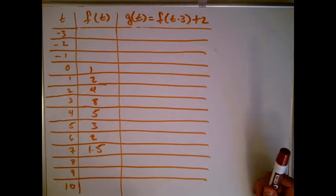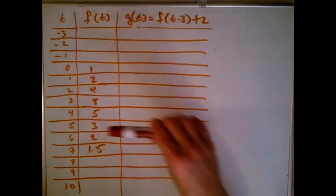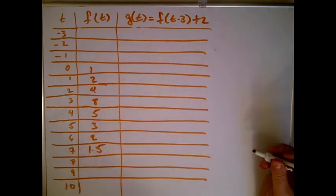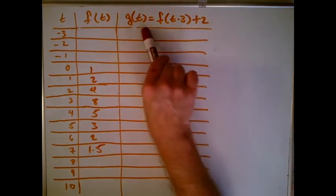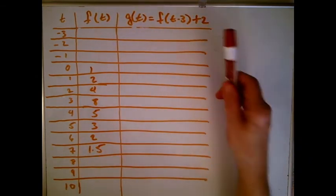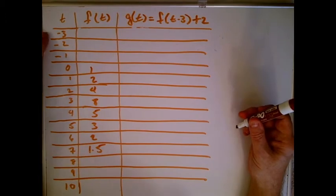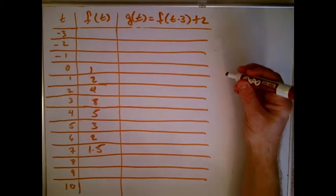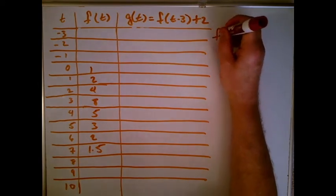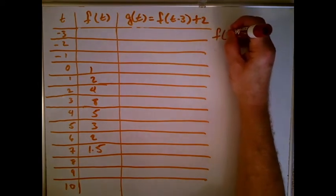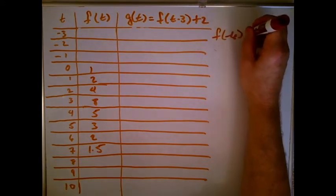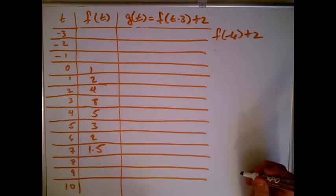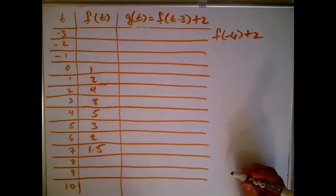The basic data is down here and I just need to figure out whether to move the data up 3 or down 3. For the first slot, t is -3, so I plug -3 in and should get f(-3 - 3) + 2 = f(-6) + 2. I don't have f of -6 — that's way off the data I have — so I can't fill in that spot.